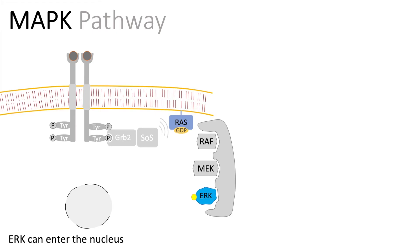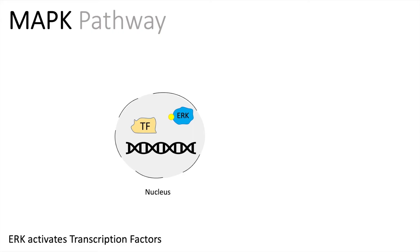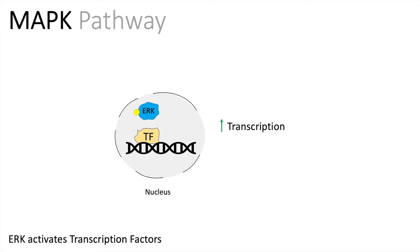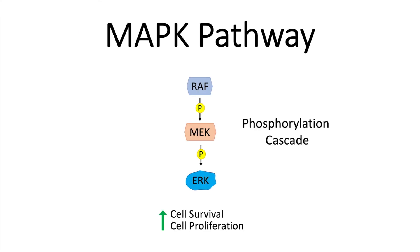ERK can now leave the complex and enter the nucleus to activate transcription factors. Let's have a closer look into the nucleus. ERK will now activate a transcription factor, and this one will bind to the DNA and promote the transcription of genes. This upregulation in transcription targets genes which are involved in cell proliferation and cell survival.